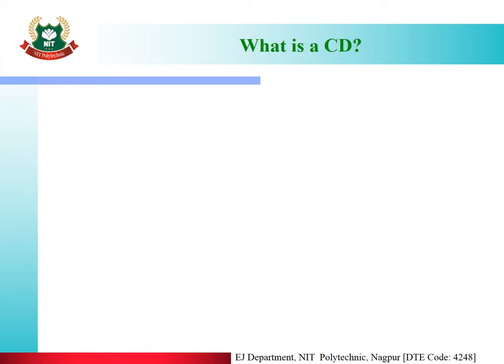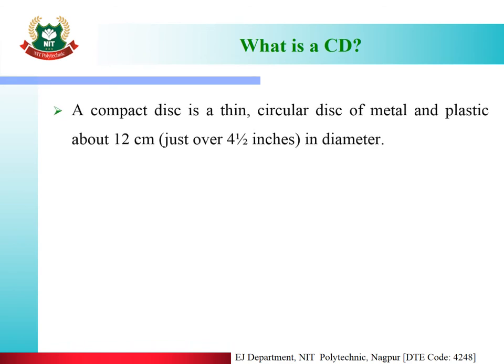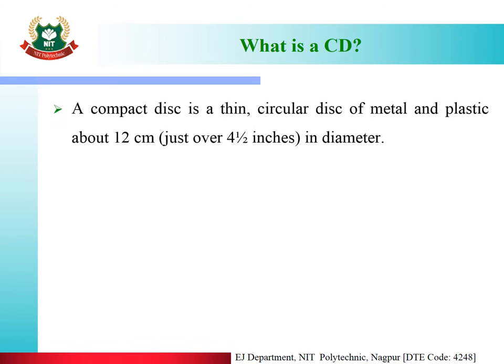What is a CD? A compact disc is a thin circular disc of metal and plastic, about 12 cm — that is, just over 4.5 inches — in diameter.